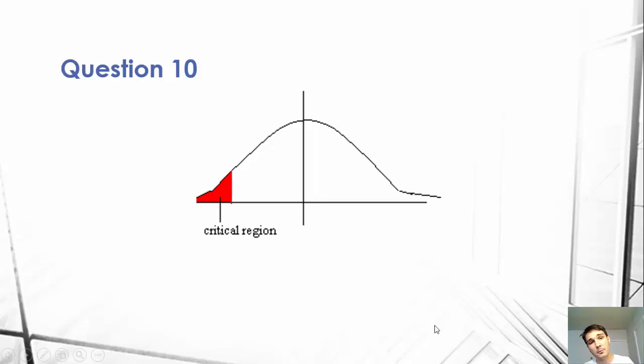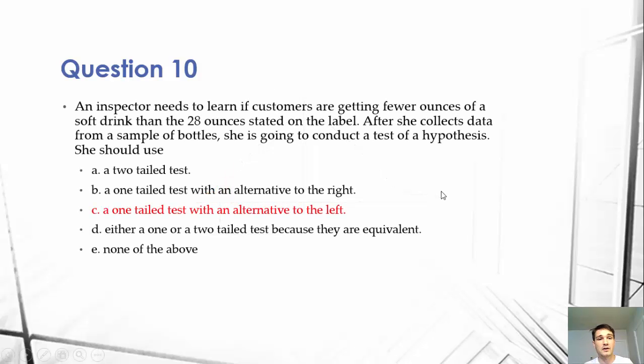I'll make another video with regards to normal curve distribution and the left-tailed, right-tailed test. But the most important thing to get here is that left will be testing less than, which is fewer than the 28 ounces. A right tests greater than, and if we use a two-tailed test, then we're testing, is there a difference from our predicted mean? So is it greater than or less than the 28 ounces?